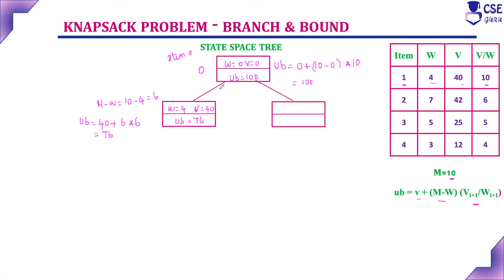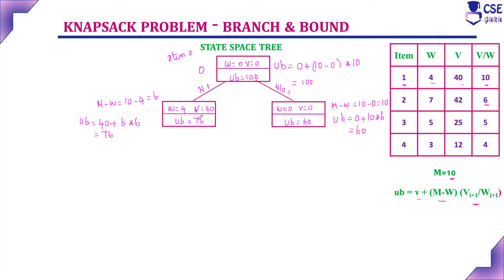Without item 1: weight will be 0 and value will be 0, so M minus W is 10 minus 0 = 10. Upper bound value is: V = 0 plus 10 multiplied by the value-by-weight ratio of the next item, which is 6. So we get the upper bound value 60. Obviously, we consider the maximum upper bound value. Including item 1 gives 76, excluding gives 60. So we continue with the node having upper bound 76.